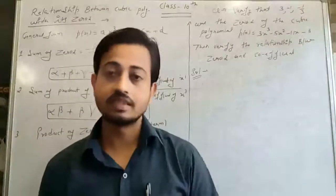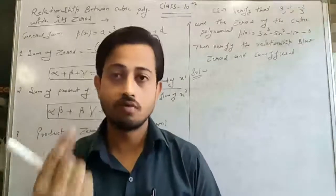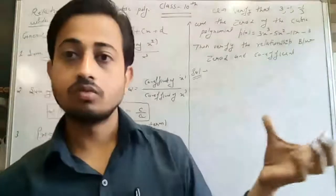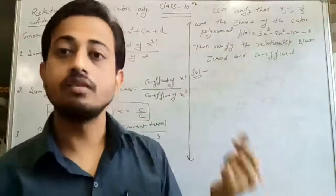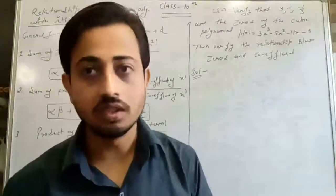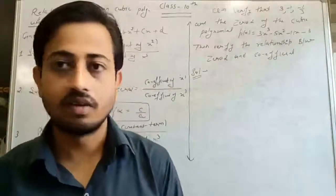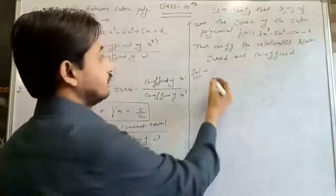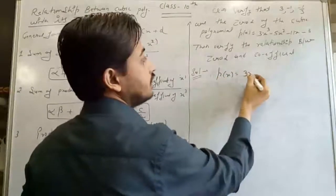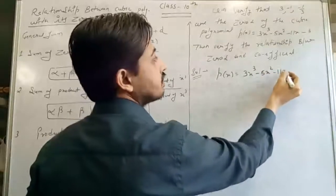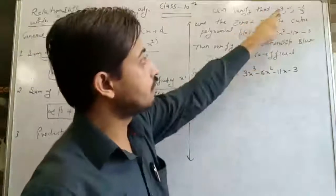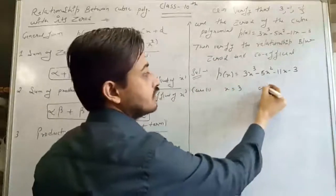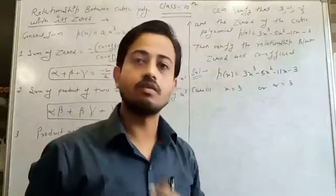Case 1: X = 3 (alpha = 3). P(3) = 3(27) - 5(9) - 11(3) - 3 = 81 - 45 - 33 - 3 = 81 - 81 = 0. So x = 3 is verified as a zero.